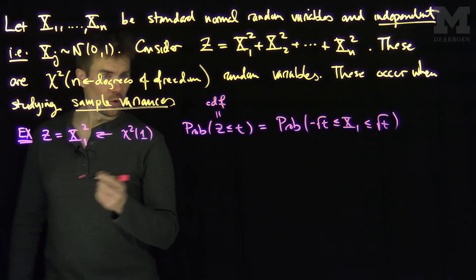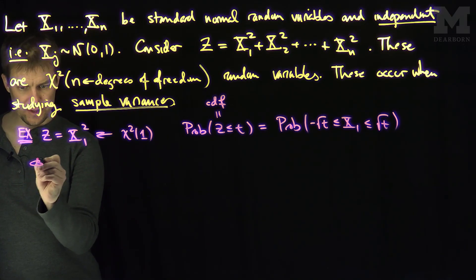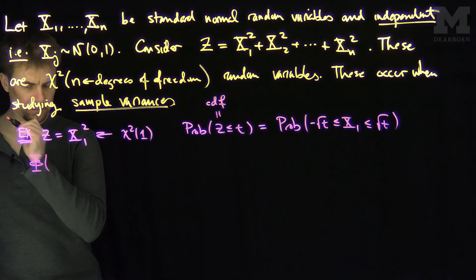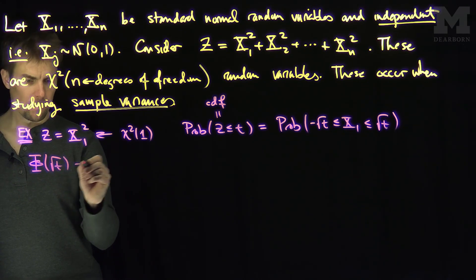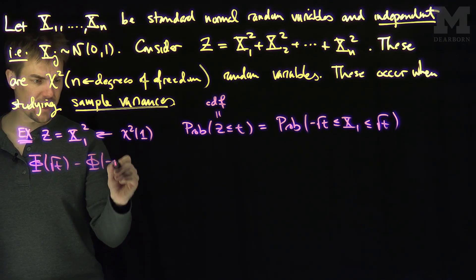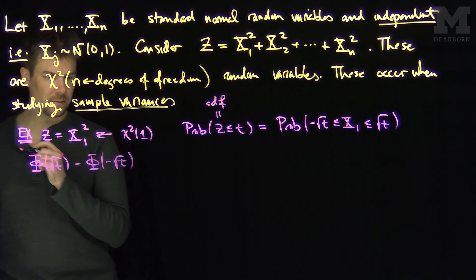Now, x1 is normally distributed, so this is just the CDF of a standard normal at root t minus the CDF of a standard normal at negative root t.